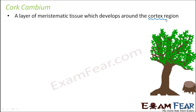So two meristematic layers basically develop. One is in the vascular region and the other one is in the cortex region. The endodermis and the parenchyma cells together is known as cortex.